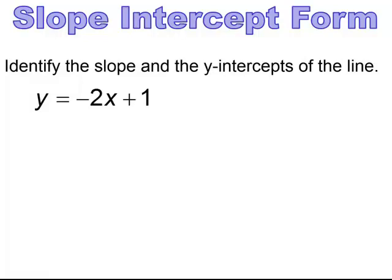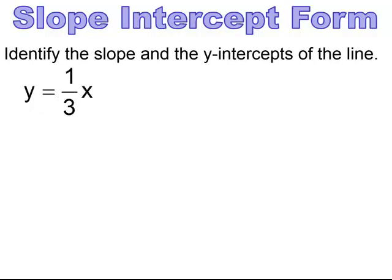Pause and try. The slope is negative 2 and the intercept is (0, 1). Pause and try. The slope is 1/2. Be careful: there's no plus or minus shown, which means the intercept is (0, 0) — at the origin.